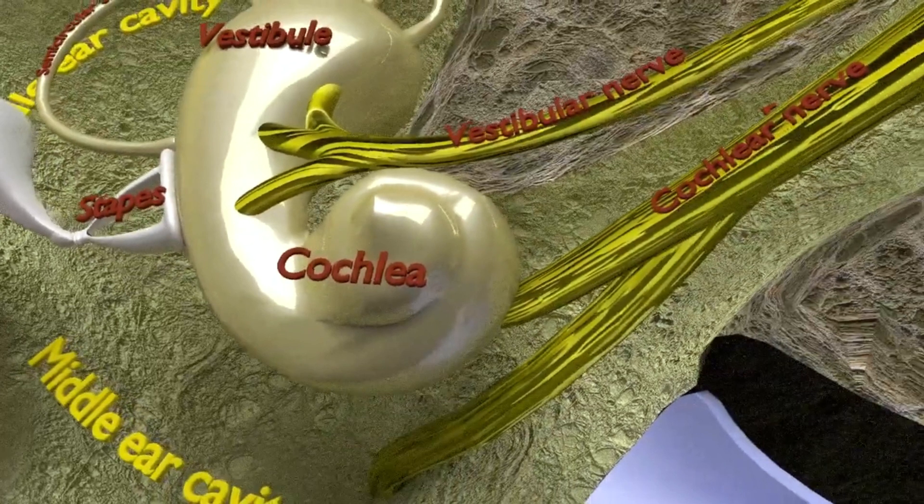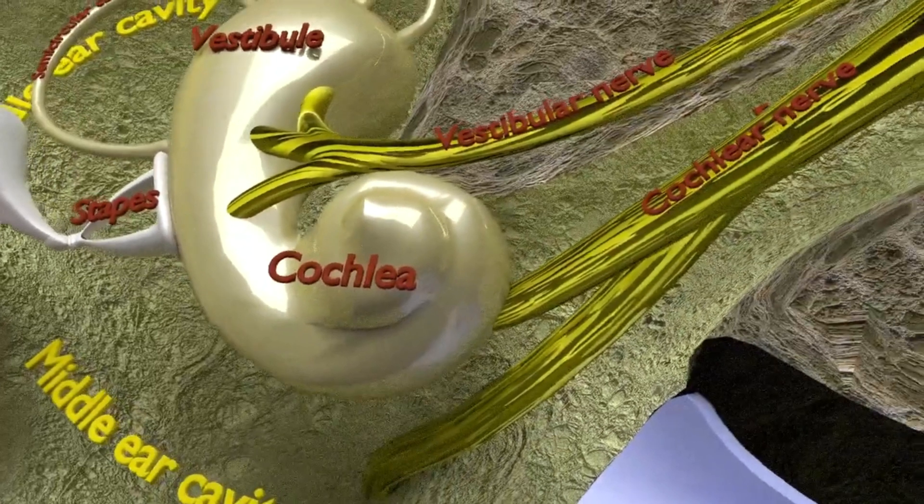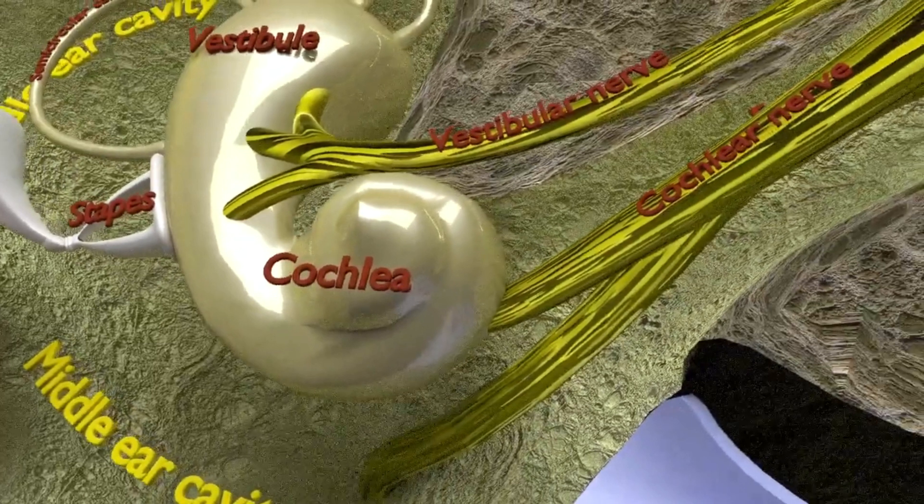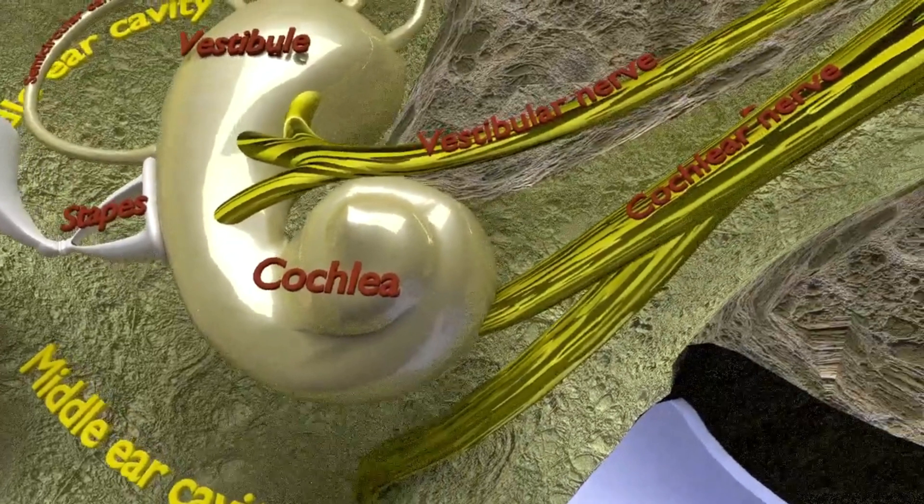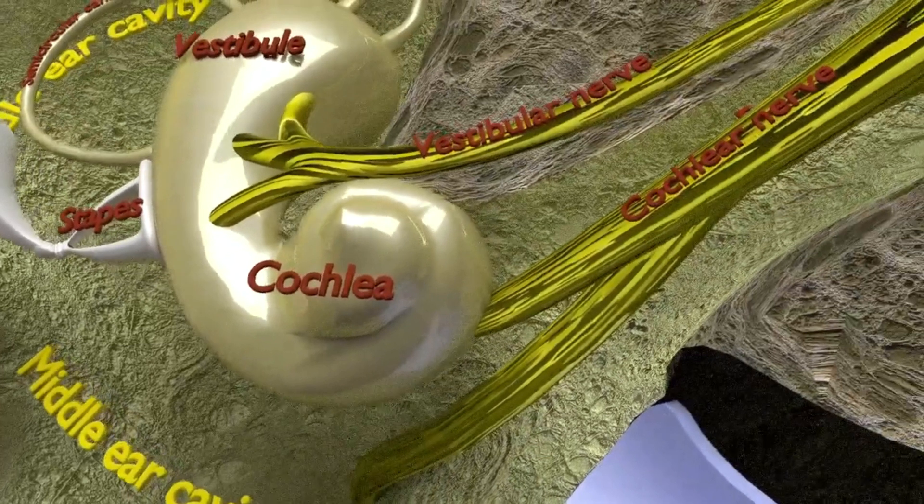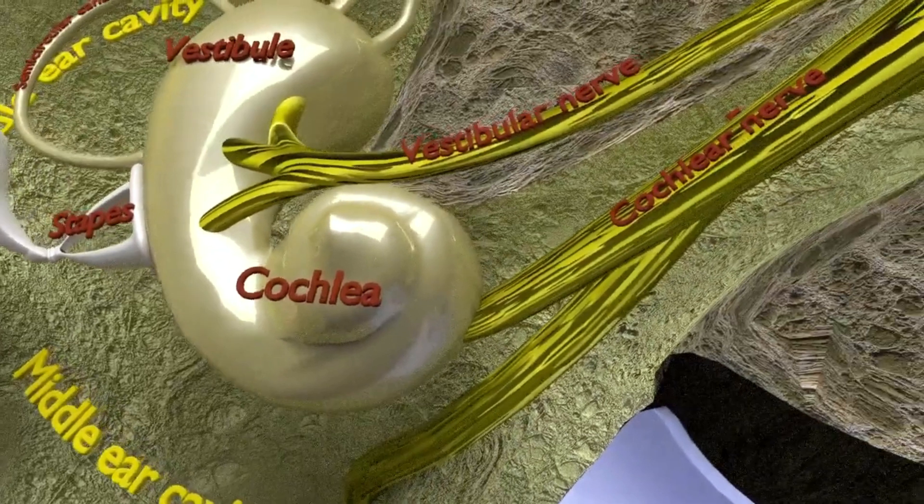The membranous labyrinth is filled with fluid called endolymph, and when these liquids move, they create fluctuations in the cochlea's hair-like structures called the stereocilia, which finally transforms the mechanical energy of the sound waves into nerve energy by creating electric impulses that are sent to the brain through the auditory or vestibulocochlear nerve.